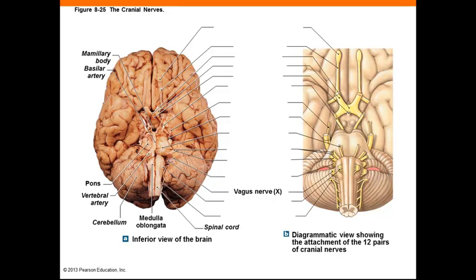The vagus nerve, number 10, has sensory pathways for ANS output to cardiac muscle, smooth muscle, and digestive glands. Motor control includes the soft palate, pharynx, and esophagus.